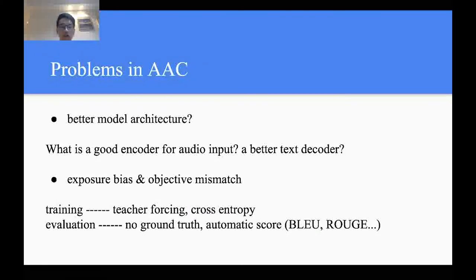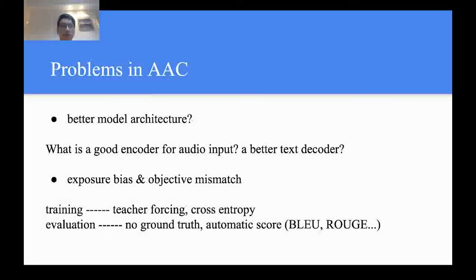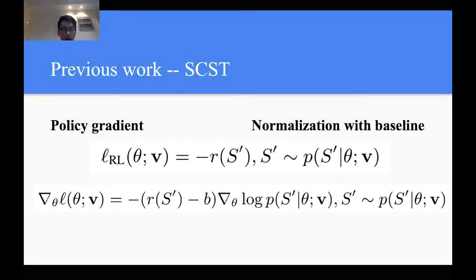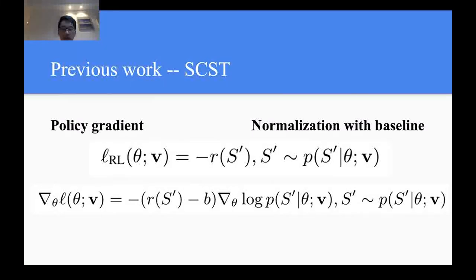This leads to error accumulation. And the training evaluation mismatch also exists in objective. Automatic scores such as BLEU, ROUGE, METEOR, CIDEr, and SPICE are used for evaluation, but during training, they cannot be calculated directly from output probabilities, so they cannot be optimized via normal backpropagation in neural network training.